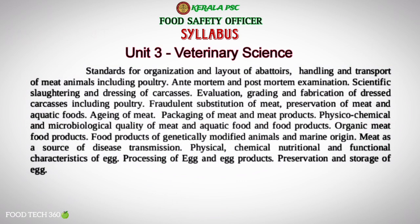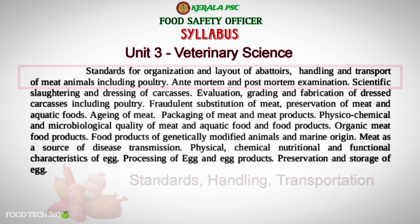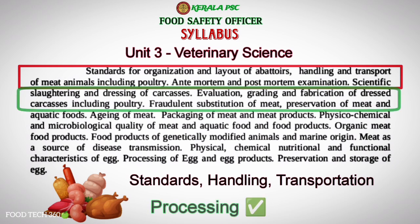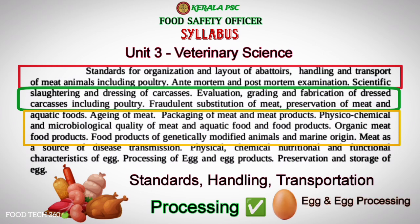Unit 3, Veterinary Sciences, covers meat and poultry standards, handling and transportation related topics, meat and poultry processing related topics, packaging of meat, physicochemical and microbiological quality of meat, organic meat food products, and egg processing related topics.